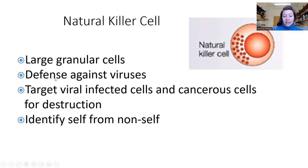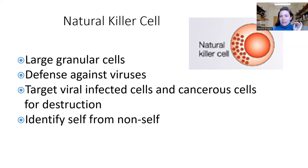Natural killer cells mostly defend against viruses. There'll be a whole lecture about how they fight cancer — targeting virally infected cells and cancerous cells for destruction. They can actually tell if a cell belongs to you or not. So if you've ever had a transplant and had to be on immune-suppressing medication, that suppresses natural killer cells as well as B cells and T cells.